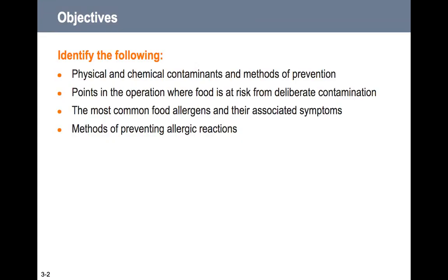The objectives of chapter three are to identify the following: physical and chemical contaminants and methods of prevention, points in the operation where food is at risk from deliberate contamination, the most common food allergens and their associated symptoms, and methods of preventing allergic reactions.